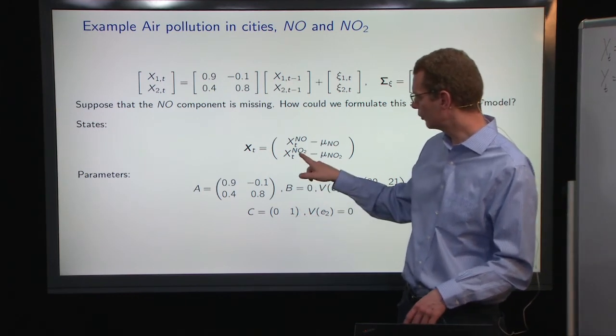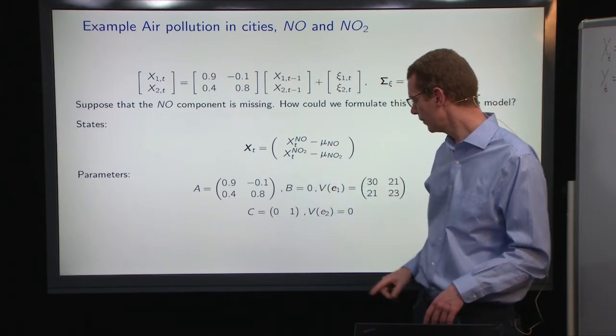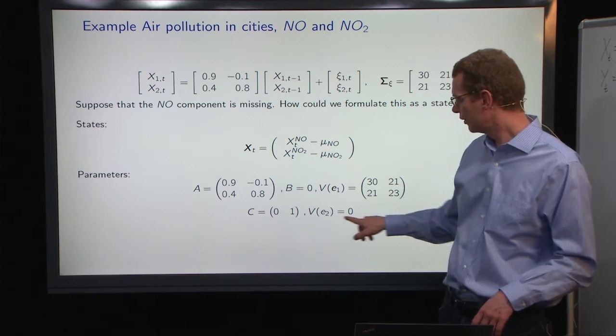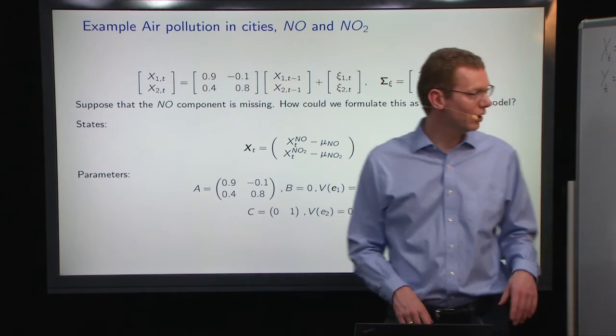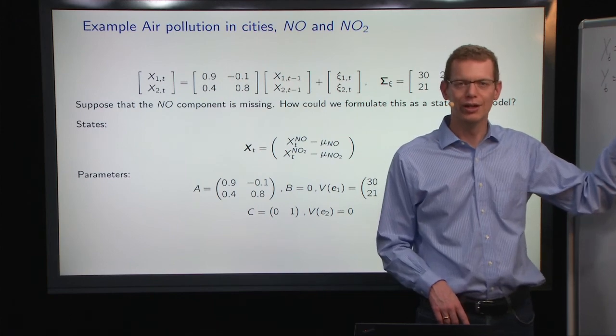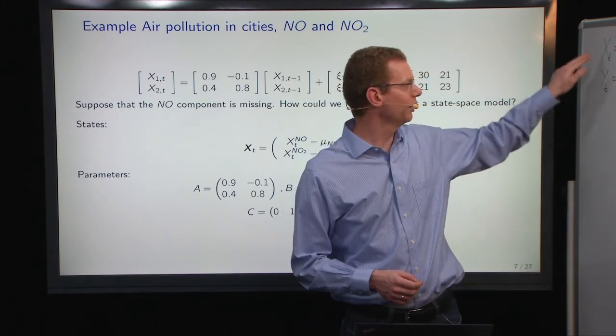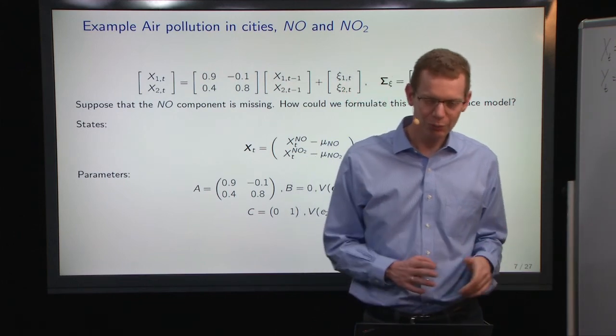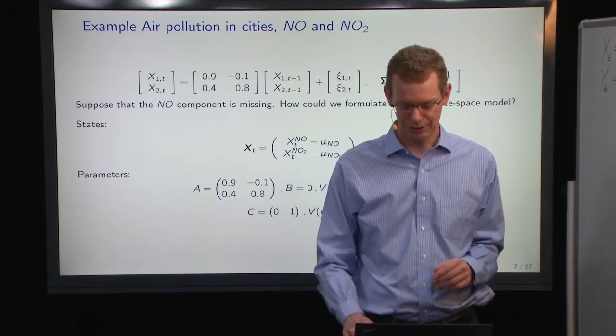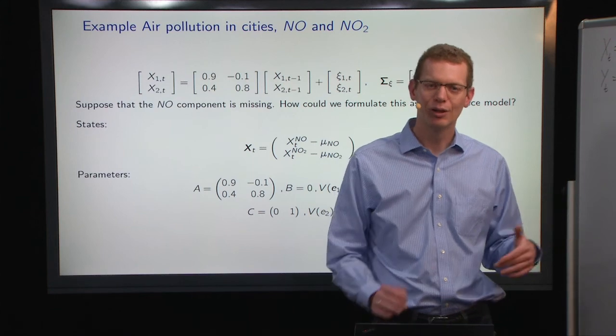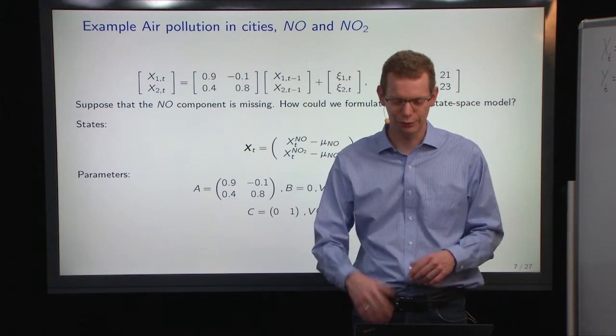We have the observation. We only observe the second state, so it's a zero, one. And then we have the variance of the estimation error that we have over here. We just, for now, assume that we measured the state directly, which is of course an approximation, but that is to give the same result as what we saw in the first lecture.